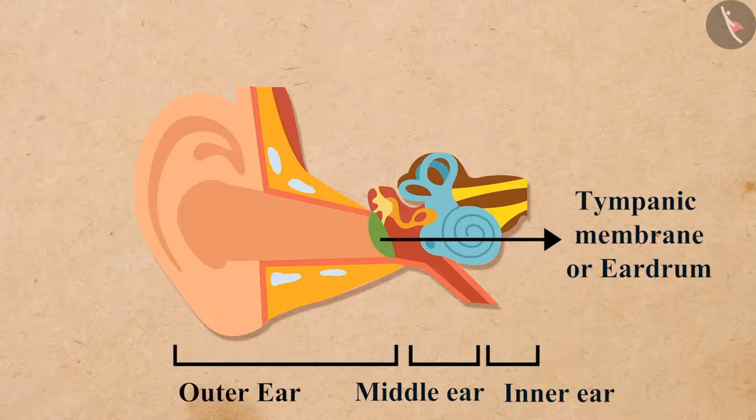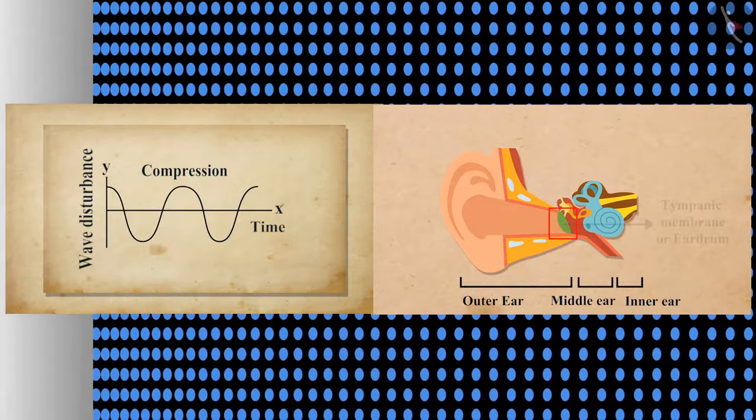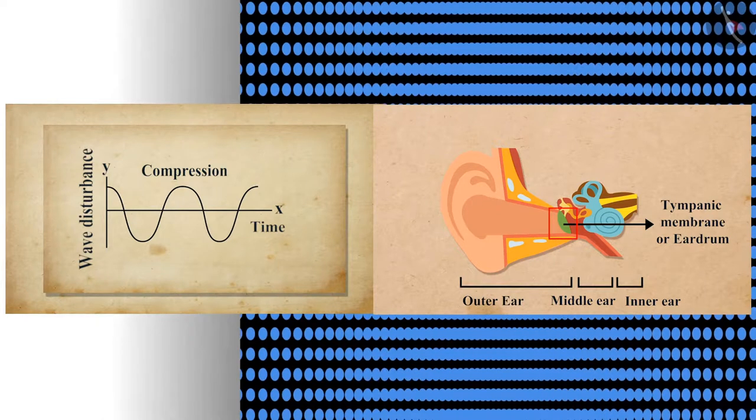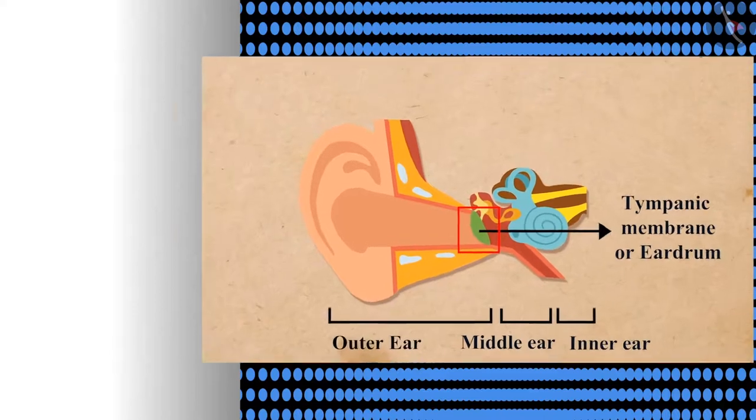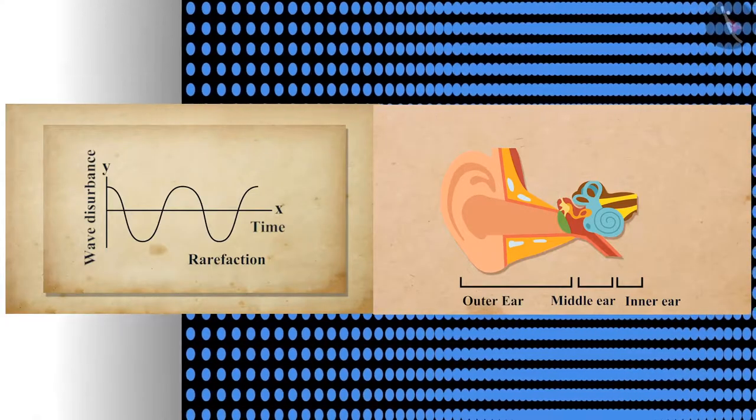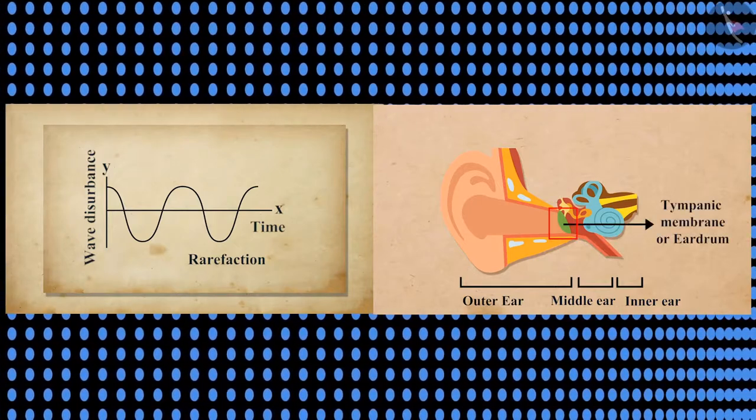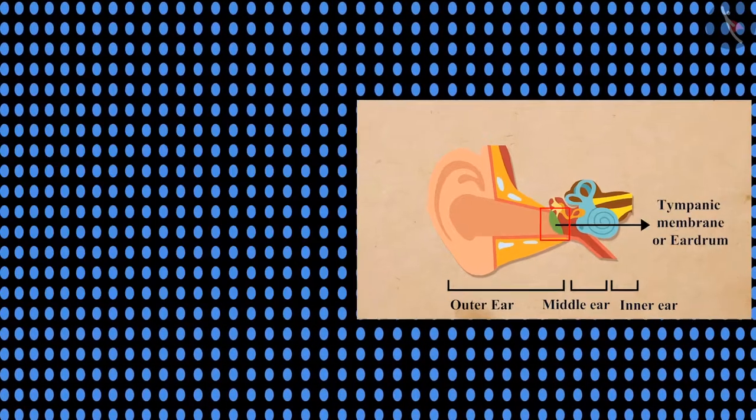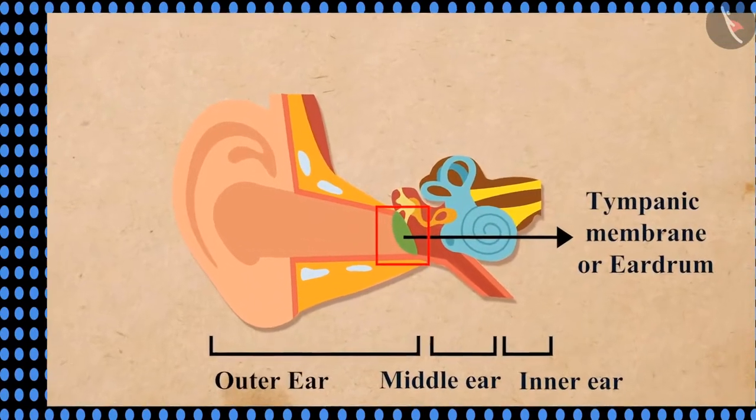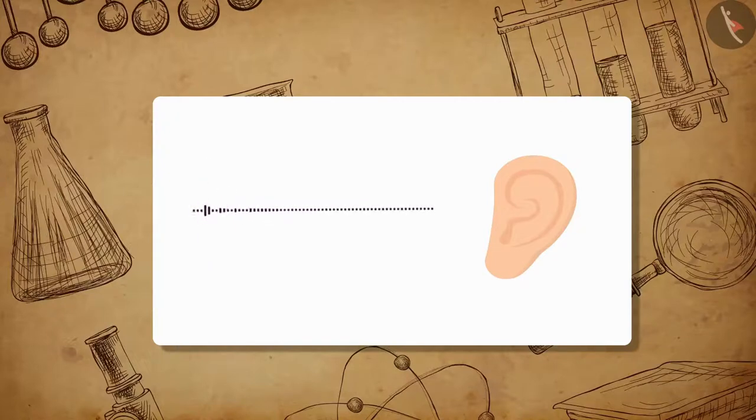Whenever a compression of the medium reaches the eardrum, it increases the pressure outside the membrane and forces the membrane inward. Similarly, when a rarefaction of the medium reaches the eardrum, it forces the eardrum outward. In this way, vibrations are produced by the sound in the eardrum.